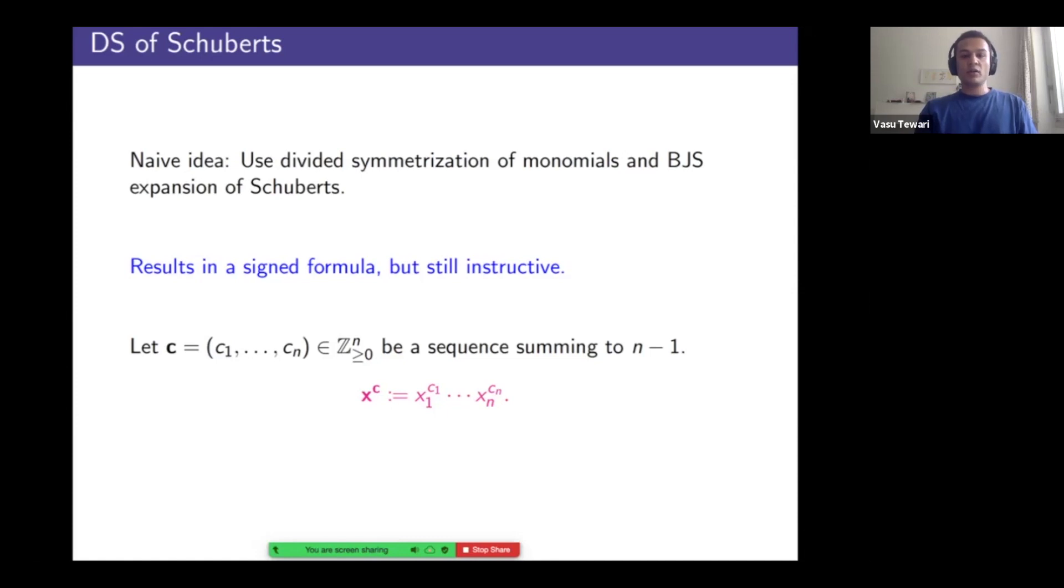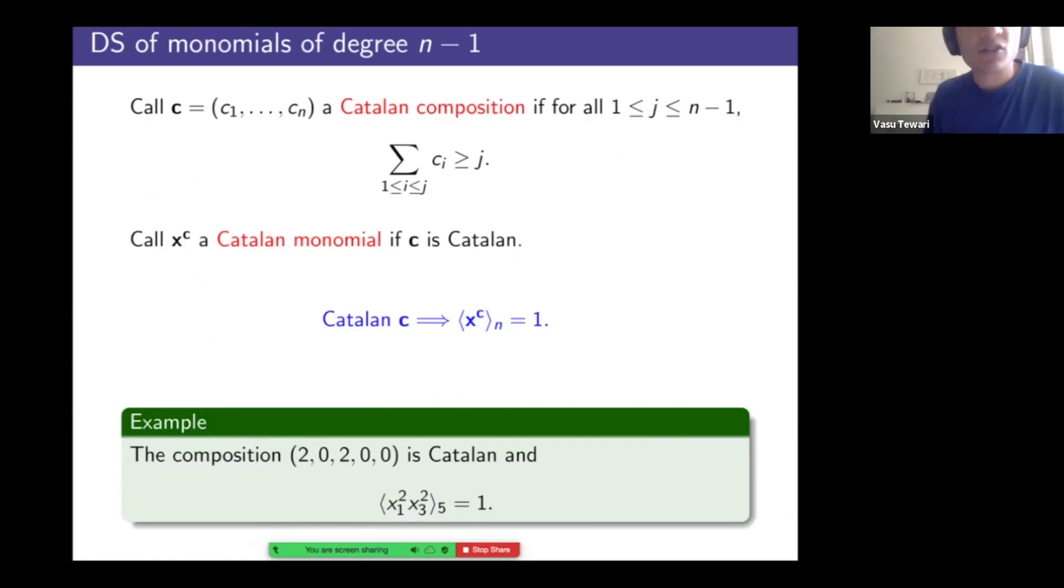Sadly, this results in a signed formula, but there's still some information that one can glean, which can guide you further. So henceforth, I'll be dealing with monomials of degree n minus one and given a weak composition of n minus one, I can easily attach a monomial by treating the composition as the exponent vector. Right. So here's a class of monomials that will play a key role. I call a composition of n minus one a Catalan composition if the following condition holds: the sum of the first j parts is at least j. That's a very classical Catalan object condition here. And this holds for all j less than n minus one. And monomials attached to these Catalan compositions, I call them Catalan monomials.